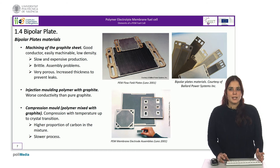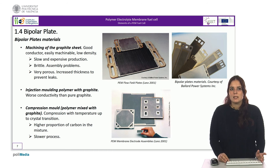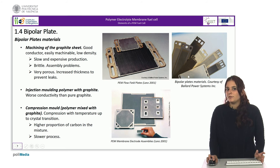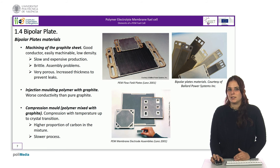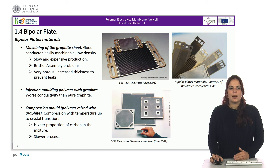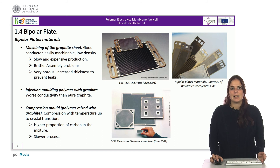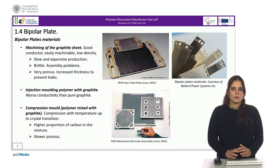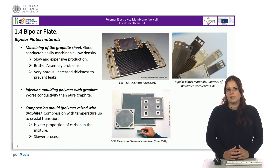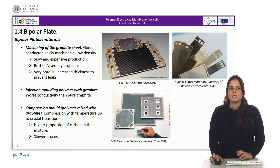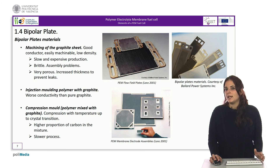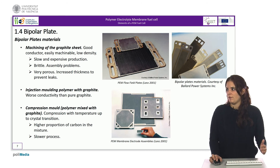The construction of the channels can be done in different ways as shown in the slide. The first is the machining of pure graphite sheets, which is a slow and expensive process where the material is brittle and can break during stack assembly. The material must be of sufficient thickness to be gas-tight. If the graphite is mixed with a polymer, the plate can be made using the injection molding technique, although in this case the conductivity is worse than that of pure graphite.